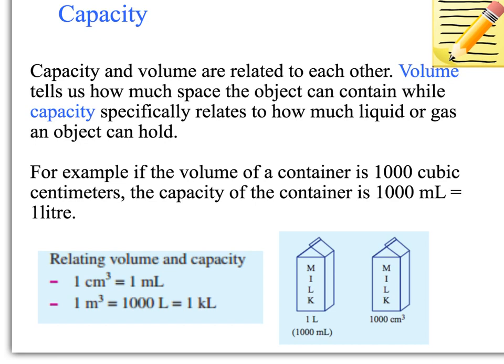When you're looking at this, you really need to remember a lot of different measurements and what they equal. For example, 1 cubic centimetre equals 1 millilitre, and 1 cubic metre equals 1 kilolitre, which is 1,000 litres.